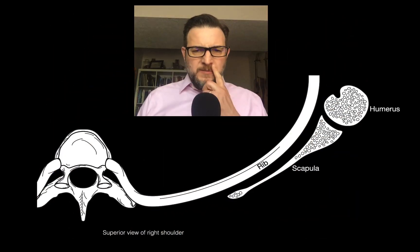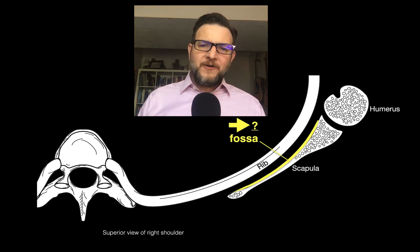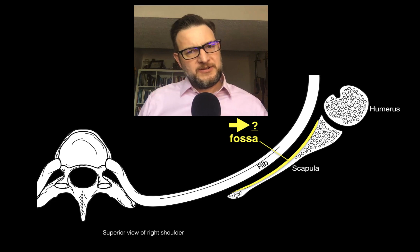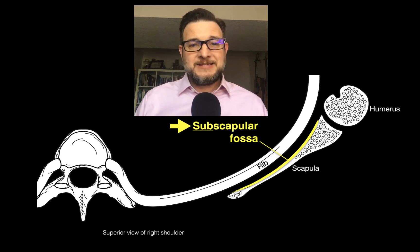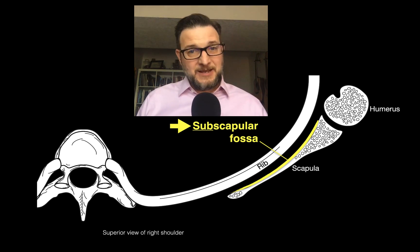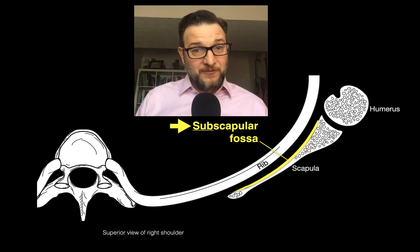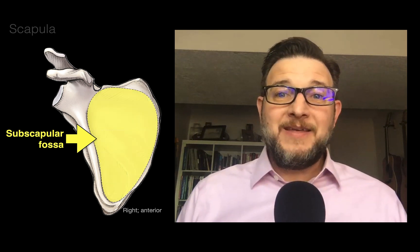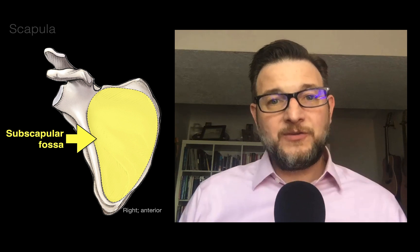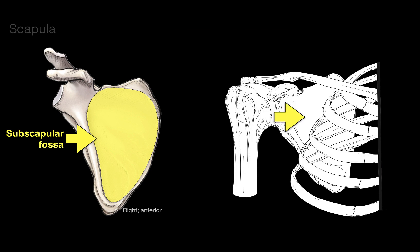The next one is going to be seen in this superior view of the right shoulder — a fossa, which is a shallow concave surface. It's on the deep surface of the scapula, right against the ribs, so we call it the subscapular fossa. The prefix 'sub' means deep, like a submarine goes deep to the water. Here in its anterior view, that shallow concave surface on the anterior surface of the scapula is the subscapular fossa, and it's also called the costal surface of the scapula.